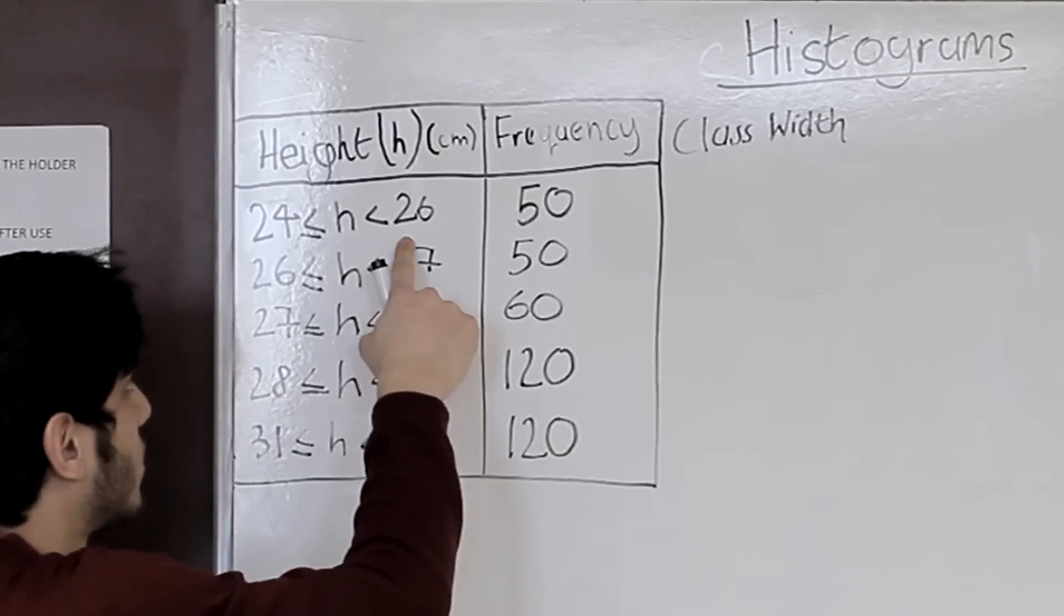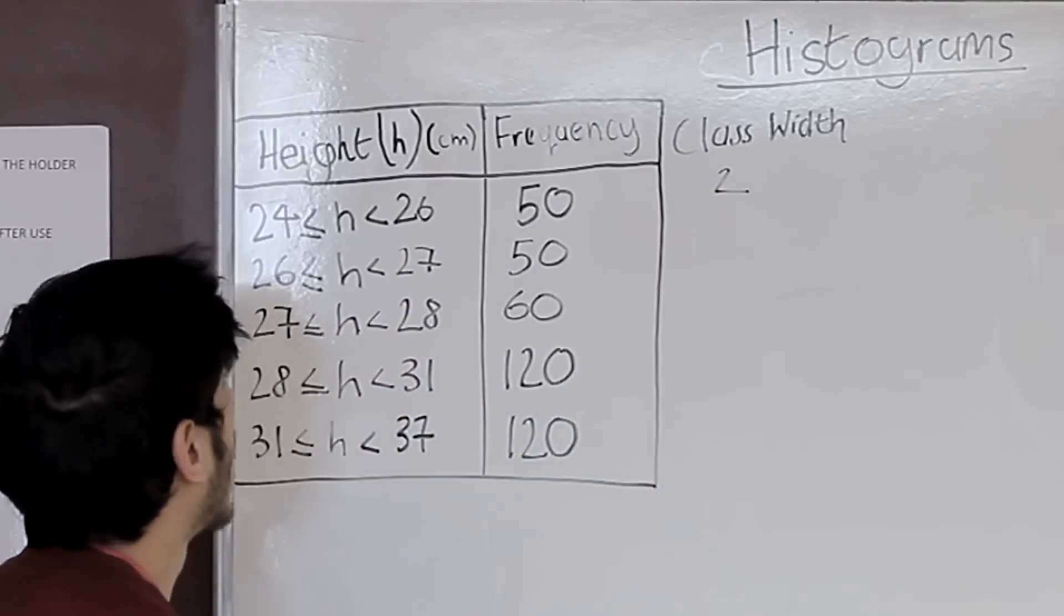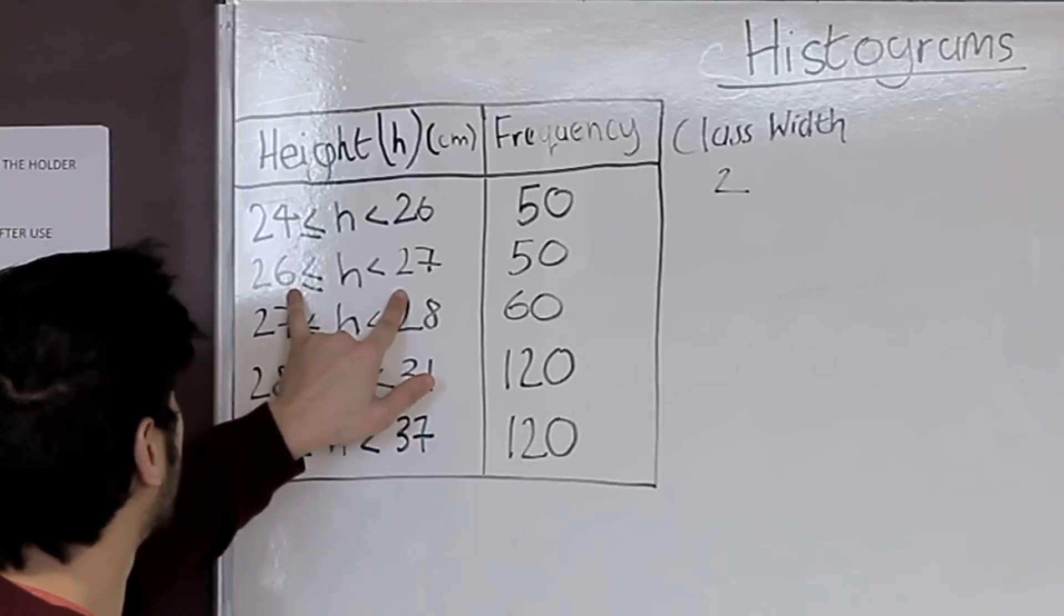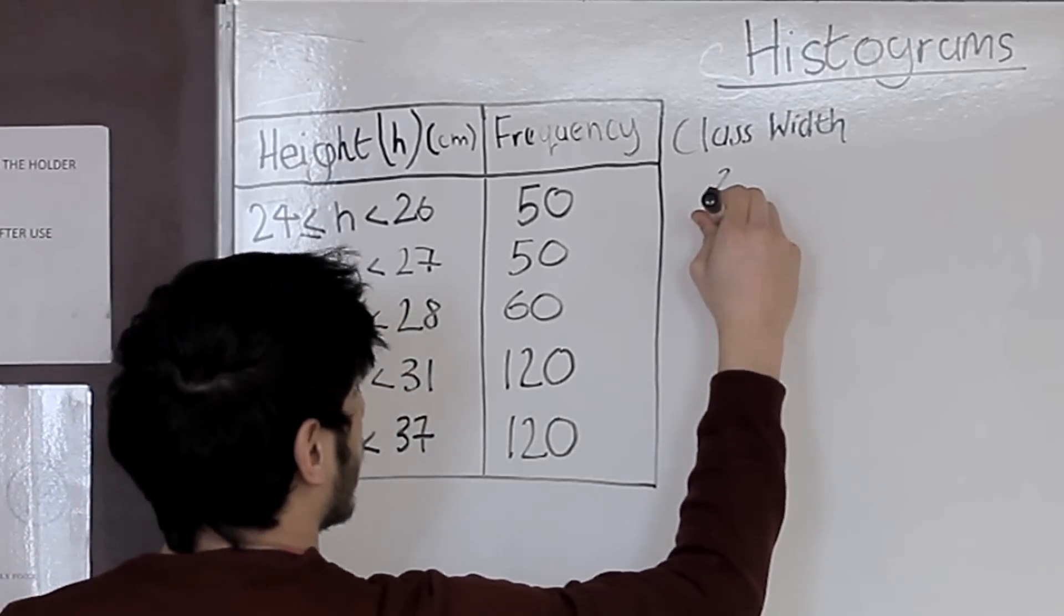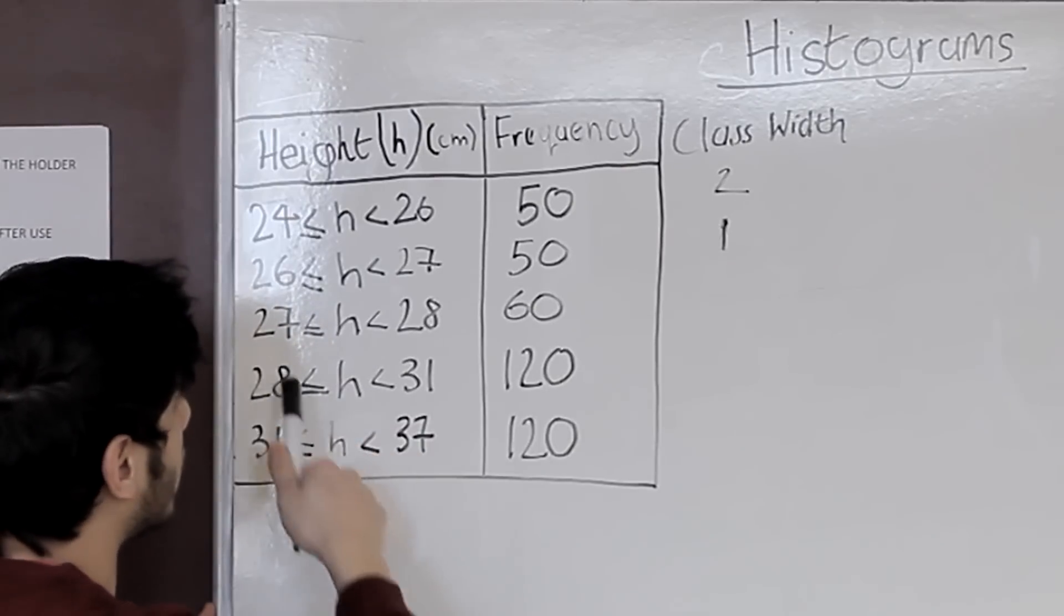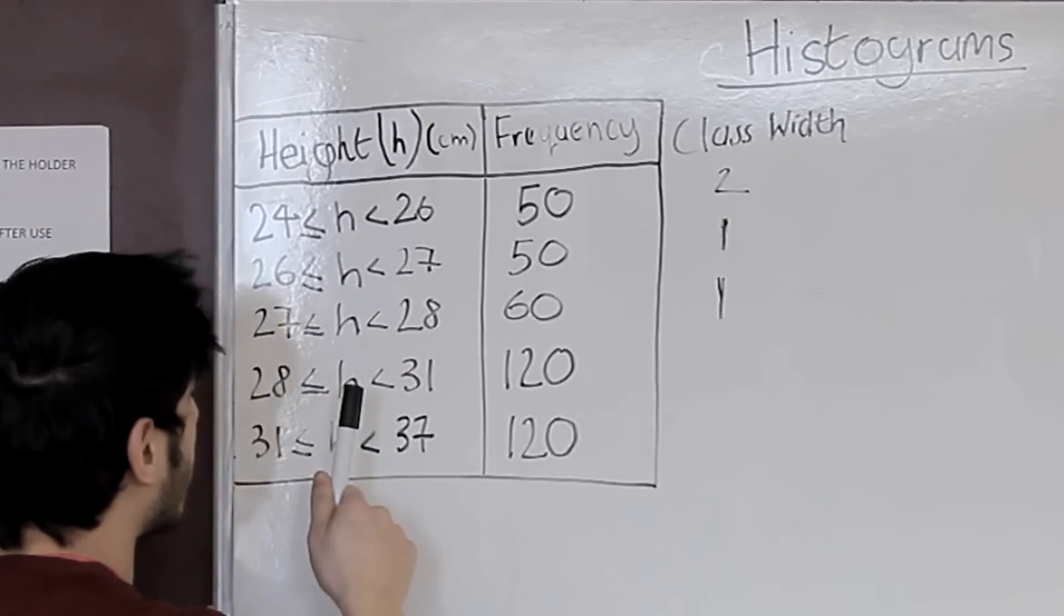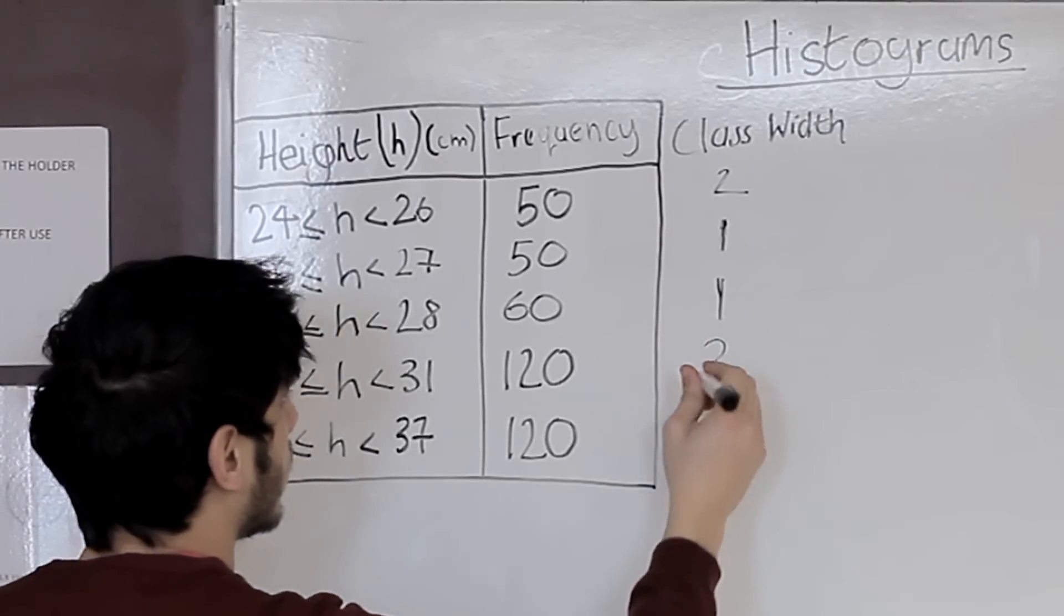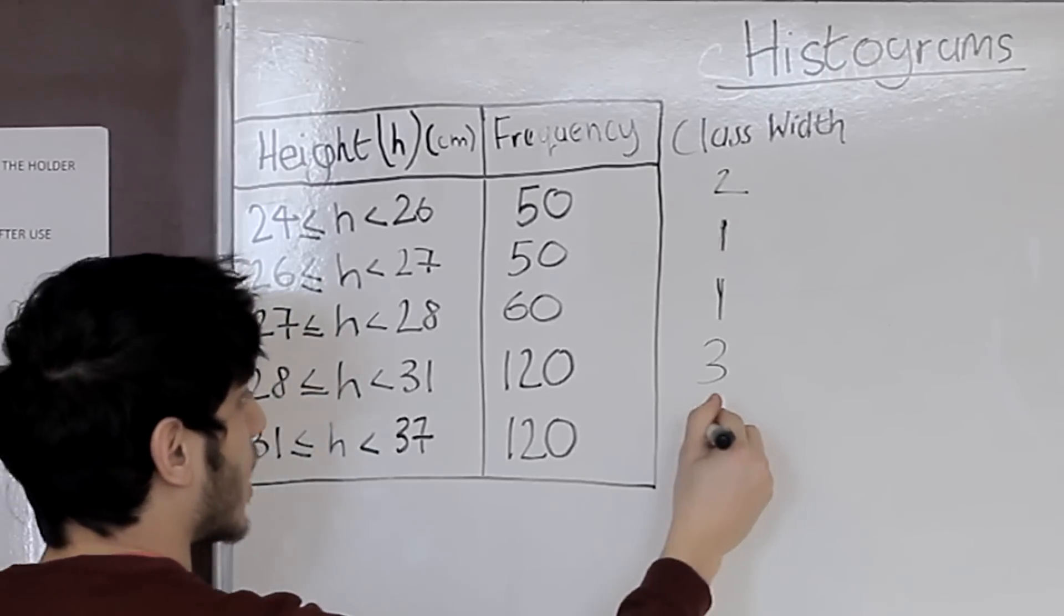So the difference between 26 and 24 is 2, so our class width is 2. For the next one 27 and 26 the difference there is 1. For the next one 28 and 27 the difference there is also 1, and for 31 and 28 the difference there is 3, and for the final one 37 and 31 the difference there is 6.